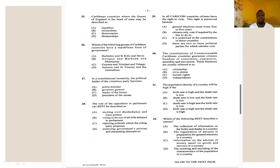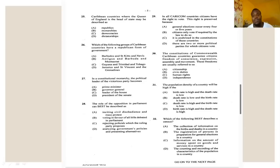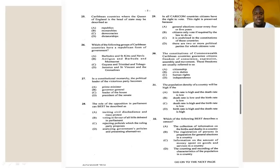Number twenty-seven says: in a constitutional monarchy, the political leader of the victorious party becomes — A: prime minister, B: governor general, C: leader of the house, or D: president of the senate. The leader of the victorious party automatically becomes the prime minister under constitutional monarchy. The answer for number twenty-seven is A.